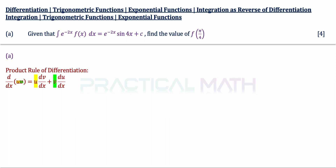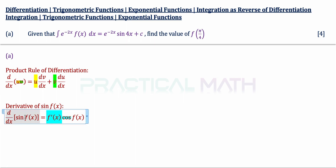We might also want to revisit the derivatives of trigonometric functions — in this case, the derivative of sin(f(x)). By differentiating sin(f(x)), differentiating sine gives us cos(f(x)), multiplied by the differentiation result of the angle. That is the derivative of sin(f(x)).